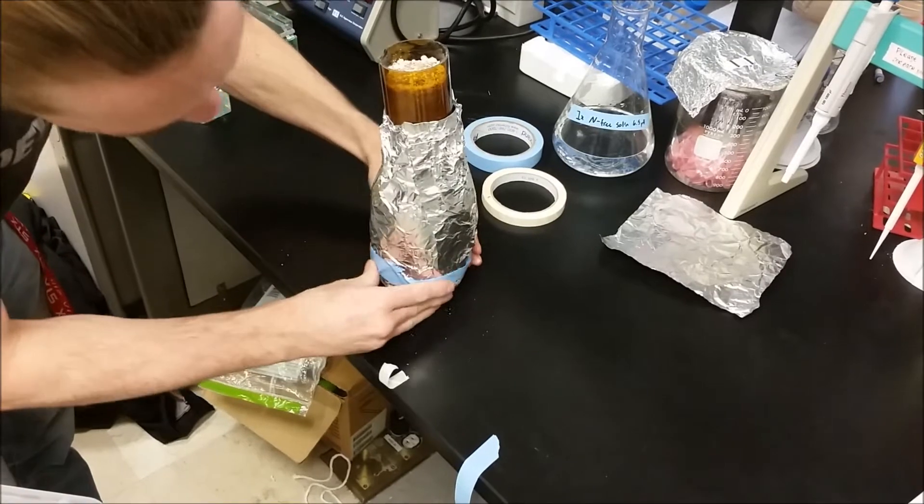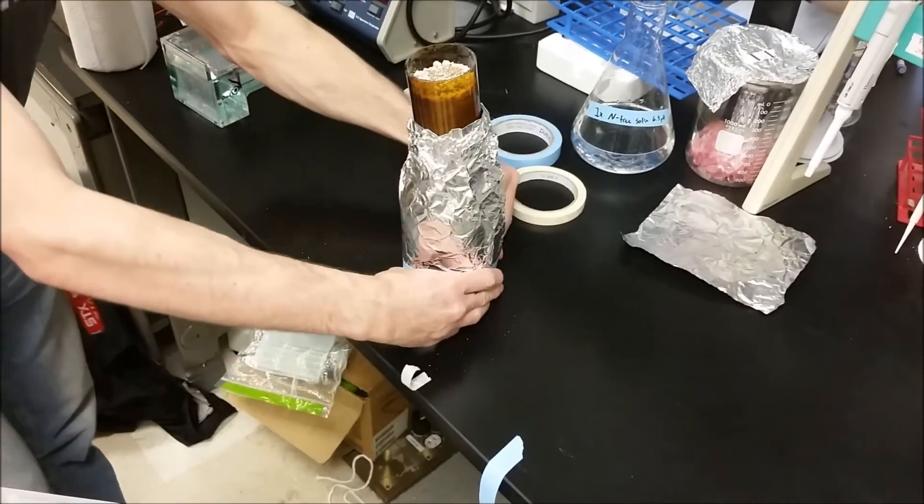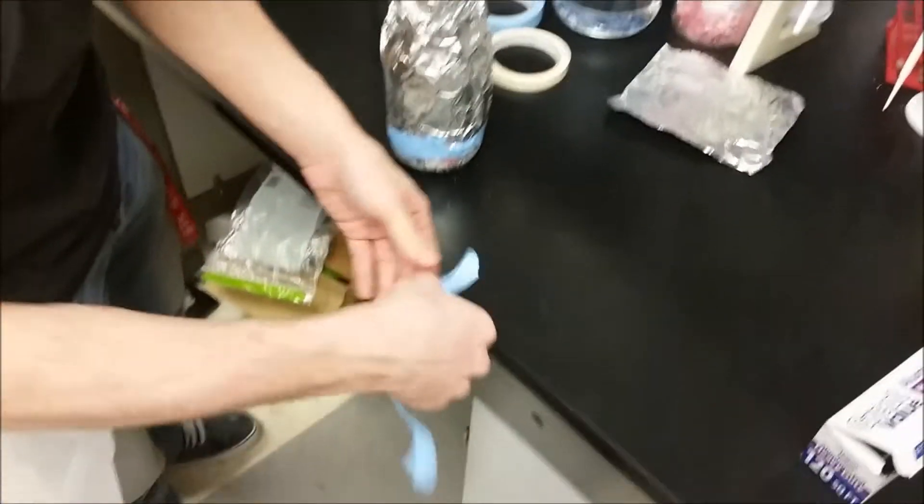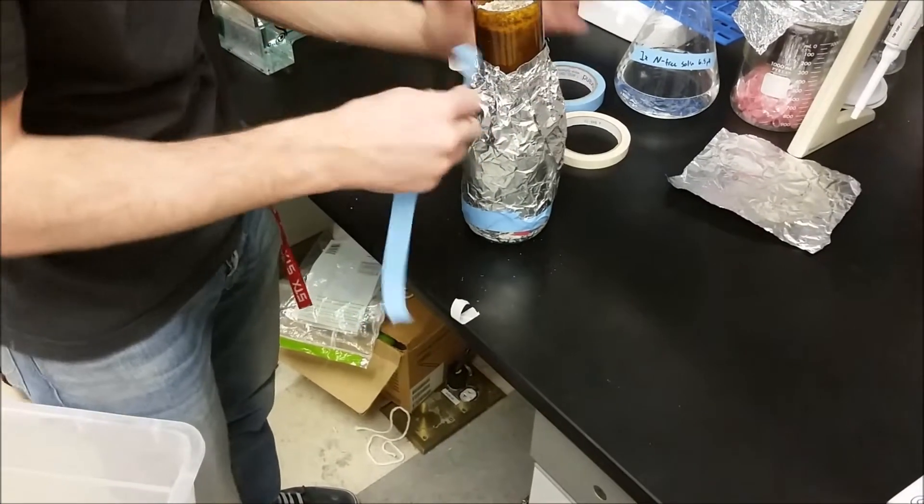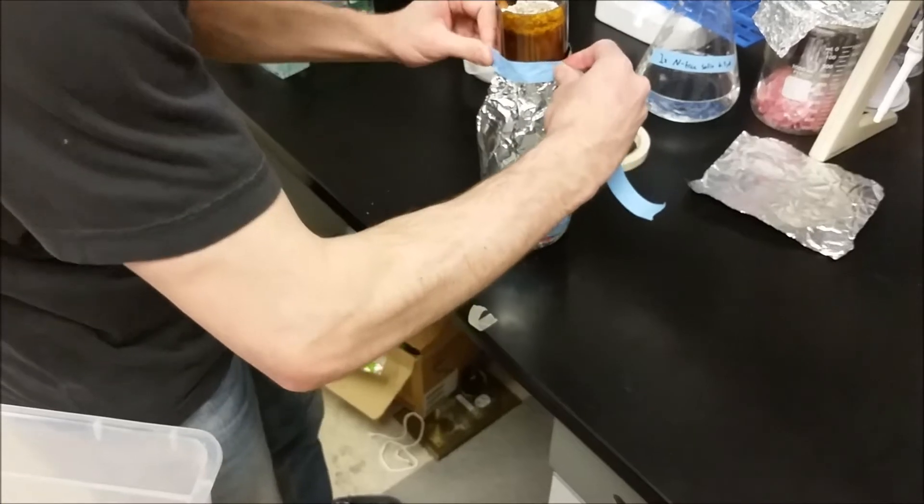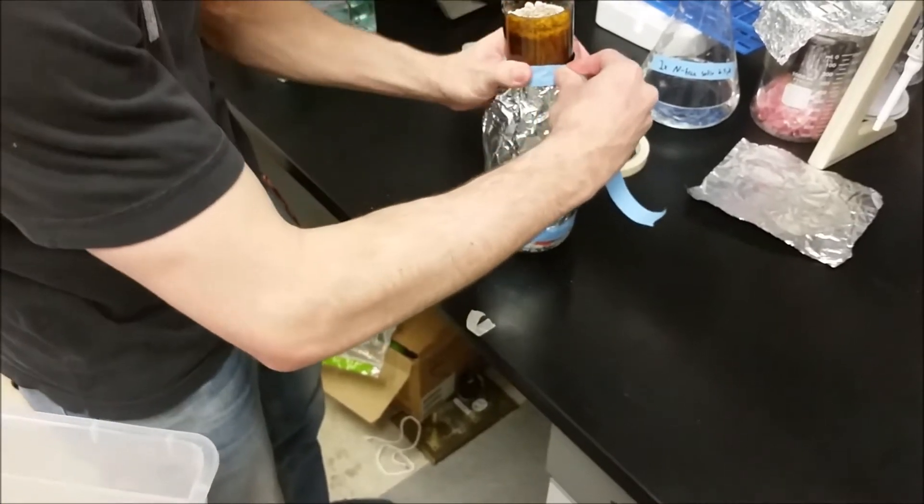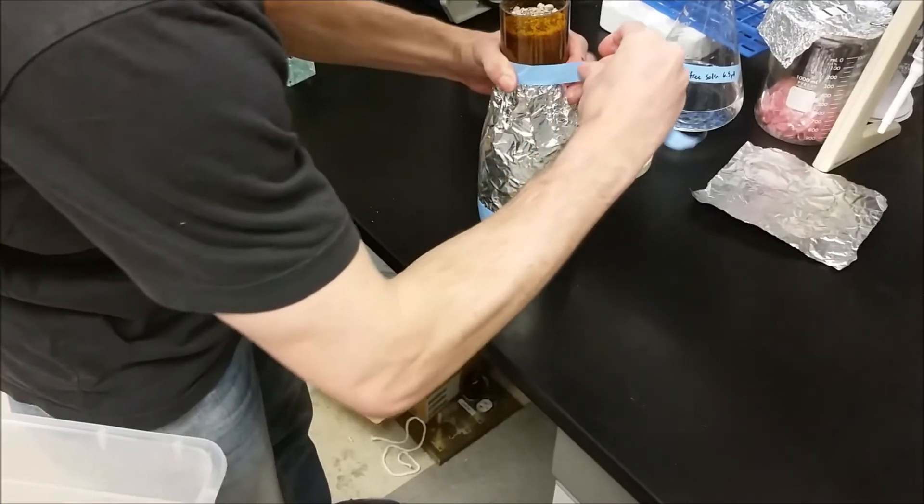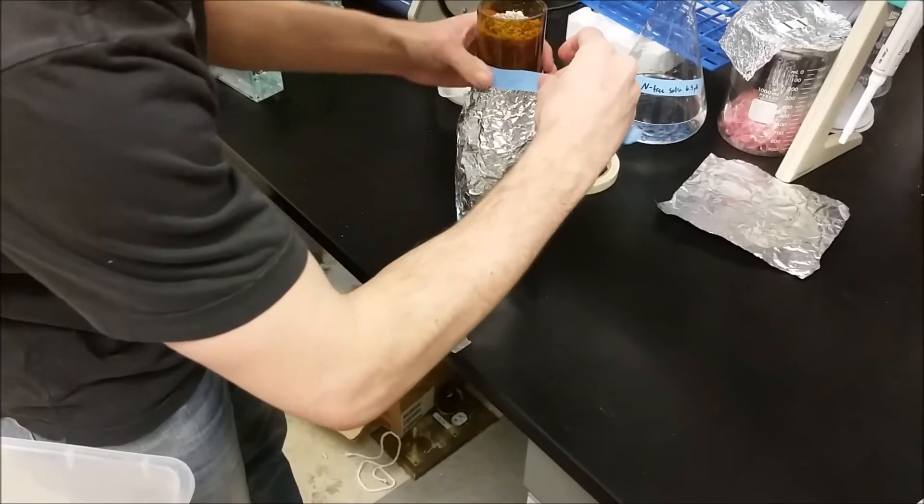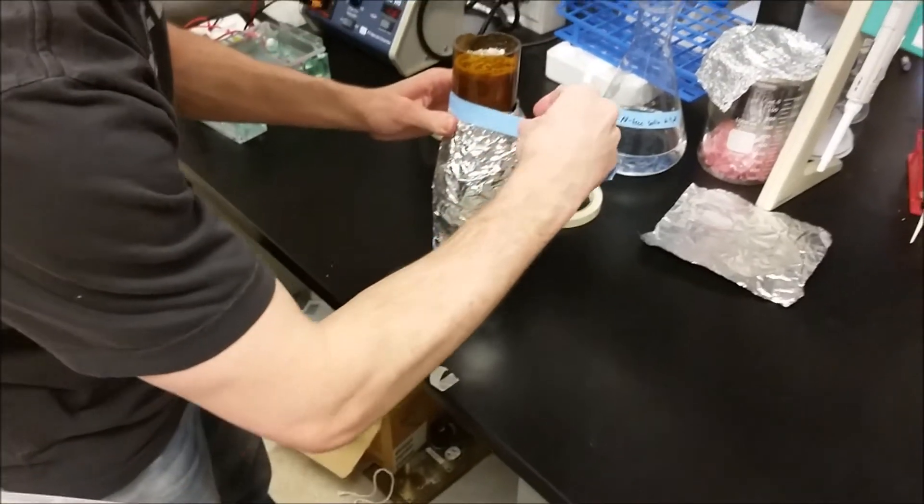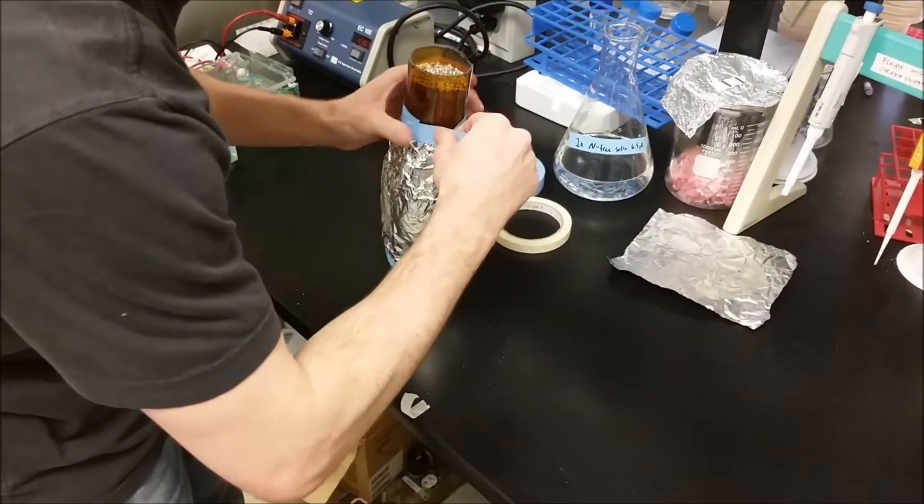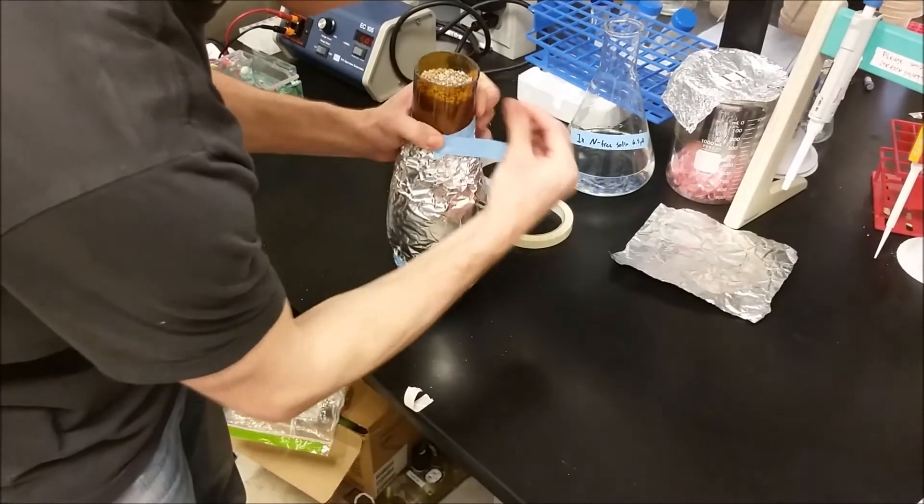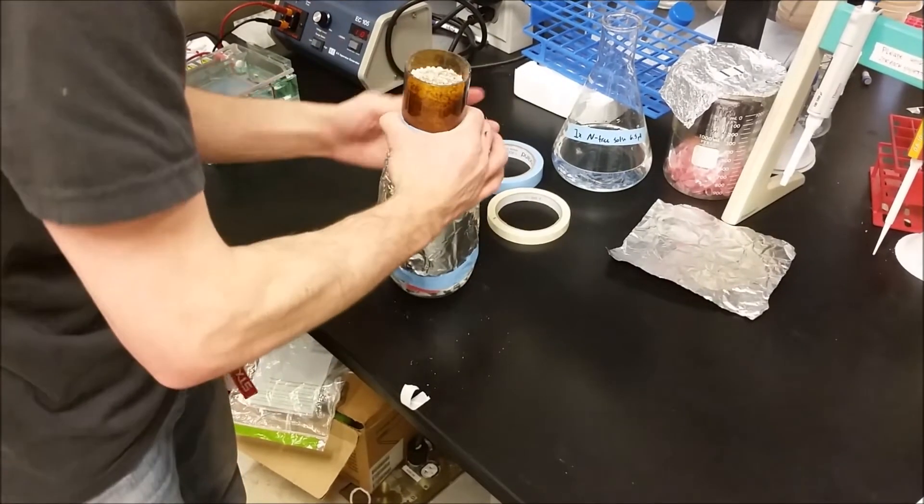So now there's nothing getting in or out of the bottom. Now I'm going to take a slightly shorter piece of tape and we're going to tape up the top, trying to make sure that there's no way that anything can get in or out through the foil. That should be fine.